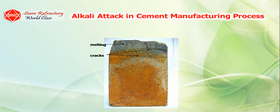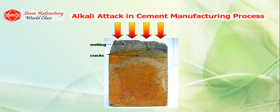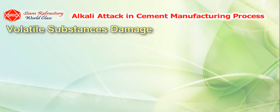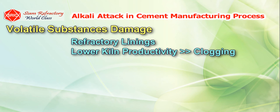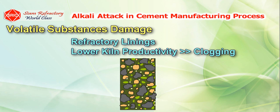As a result, the refractory suffers from both rapid deterioration from direct reaction with volatile substances, and the infiltration of substances into the inner layer of the bricks, where they accumulate and eventually cause the brick to crack and spall. Not only do volatile substances damage refractory linings in each application zone, but they also lower kiln productivity by clogging the cyclone and riser duct area through the accumulation of cake or clogging material.